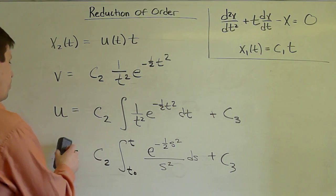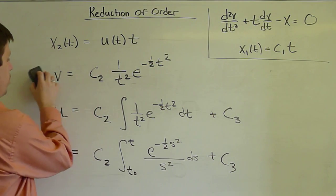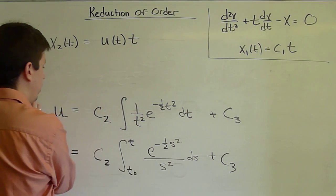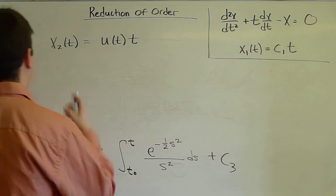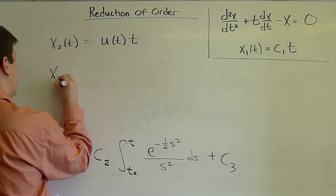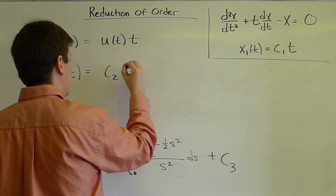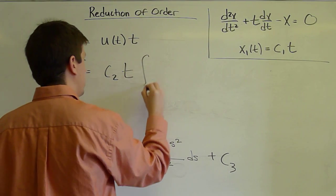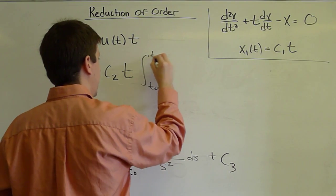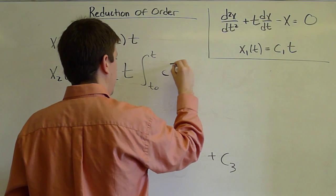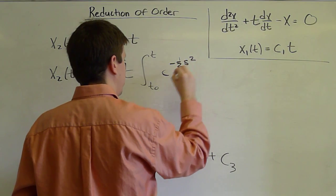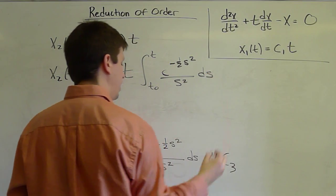So now we have u. To get x2, we simply multiply by t. And we will be done. So x2 is c2 t times the integral from t0 to t of e^(-1/2 s²)/s² ds.